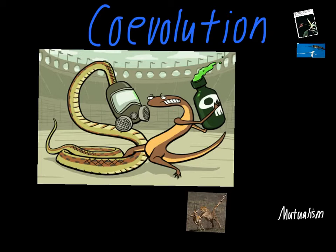Over time, the toxin in the newts has become more and more severe, while tolerance in the garter snakes has gone up and up. This is almost like a co-evolutionary arms race where they're competing with each other — the newt developing a better toxin while the snake develops higher tolerance. Keep in mind, this isn't a conscious process. The newts that naturally have the stronger toxin are the ones more likely to survive their encounter with garter snakes, and the moths with longer tongues are the ones that can reach nectar and are more successful.